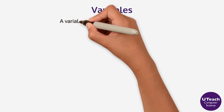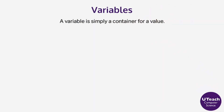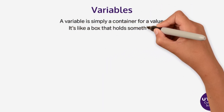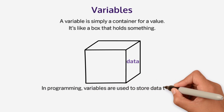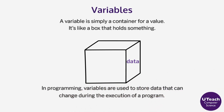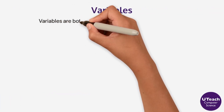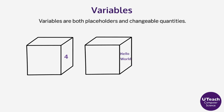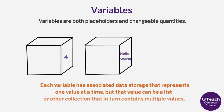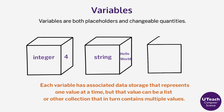A variable is simply a container for a value. It's like a box that holds something. In programming, variables are used to store data that can change during the execution of a program. Variables are both placeholders and changeable quantities. Data values, such as numeric values and string values, can be stored in variables or standalone constants in programs. Each variable has associated data storage that represents one value at a time, but that value can be a list or other collection that in turn contains multiple values.